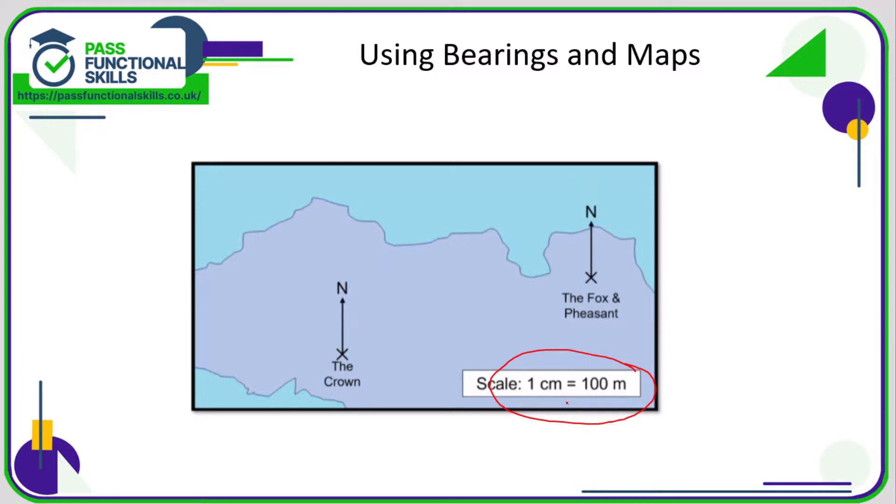Well, we know we've got a scale of 1 cm equals 100 meters. So what that means is that for every 1 centimeter on the map, that's 100 meters in real life. So all you need to do is measure the distance between The Crown and The Fox and Pheasant.